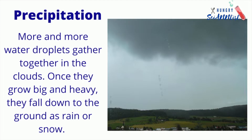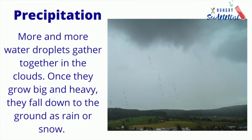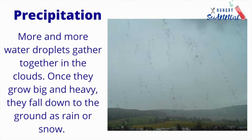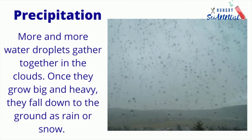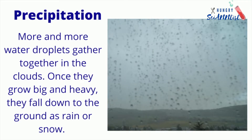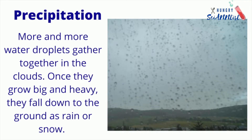Precipitation: More and more water droplets gather together in the clouds. Once they grow big and heavy, they fall down to the ground as rain or snow.